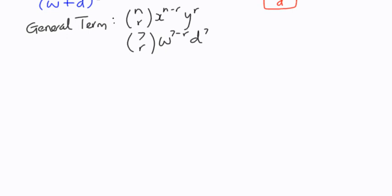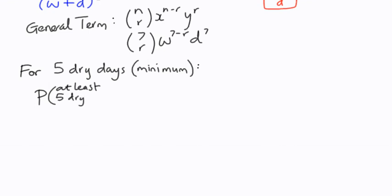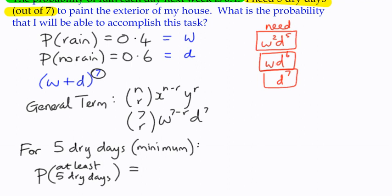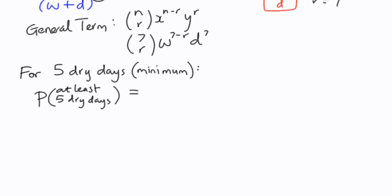And so what we want to consider is for 5 dry days minimum. Or we could say that the probability of at least 5 dry days is equal to, well, we've already said here that we want D to be 5, so R equals 5, R equals 6, or R equals 7. So for 5 dry days, we want R equals 5, 6, or 7.